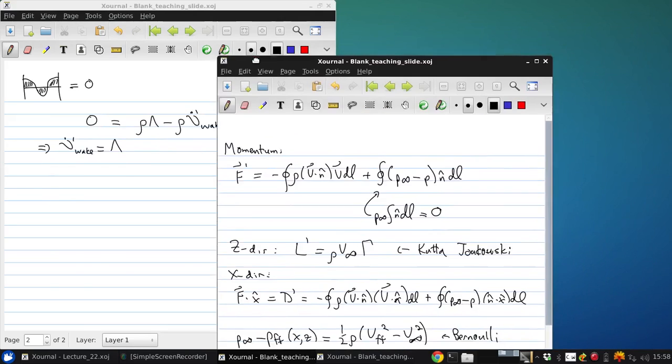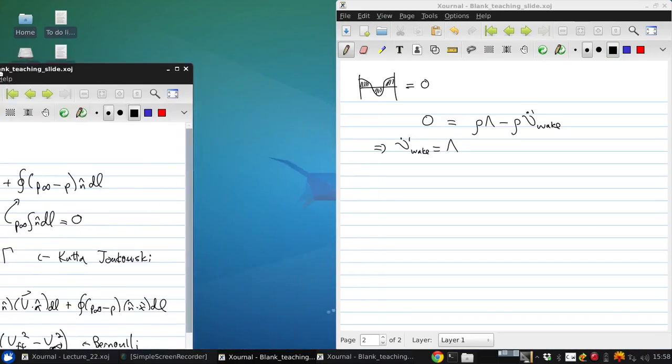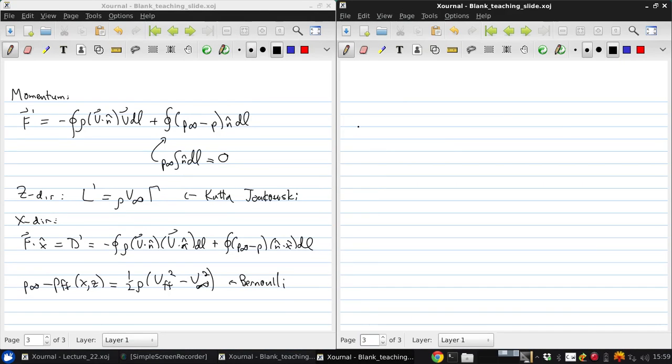So we can write an explicit expression for the far field velocity. V far field squared is going to be, now using our definition of the velocity field, this is V infinity cos theta plus lambda over 2 pi r all squared plus V infinity sin theta minus circulation over 2 pi r all squared.